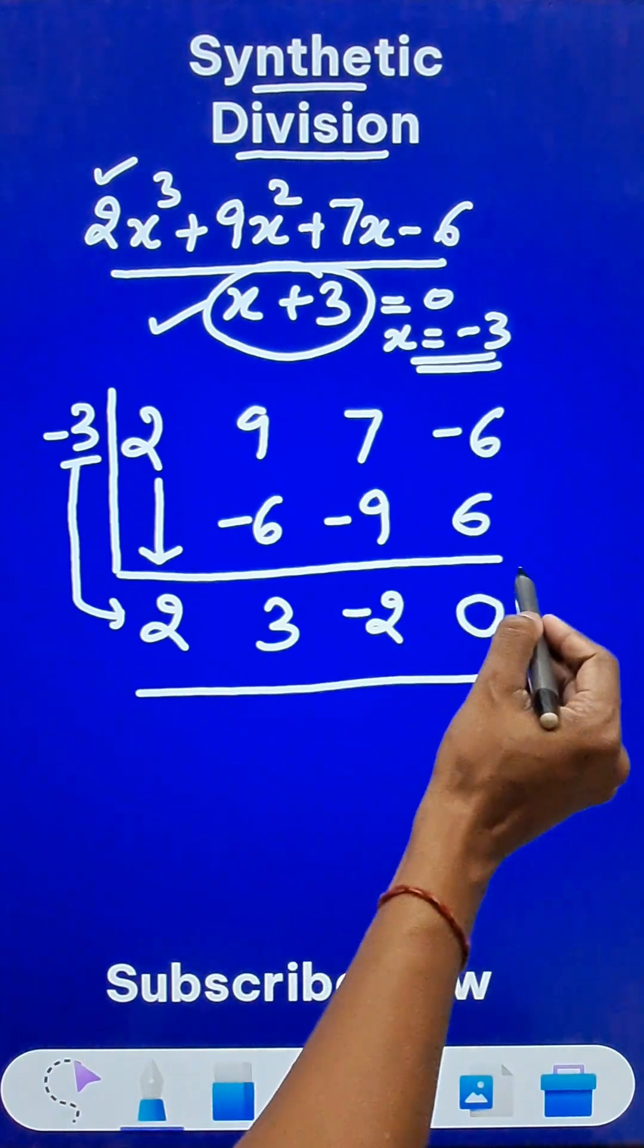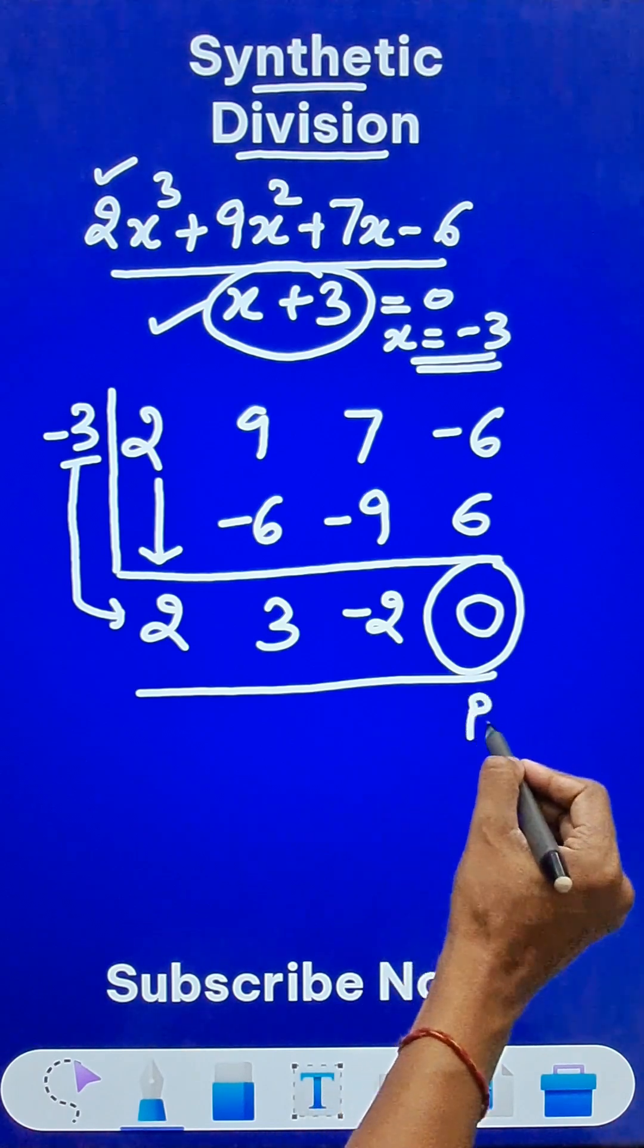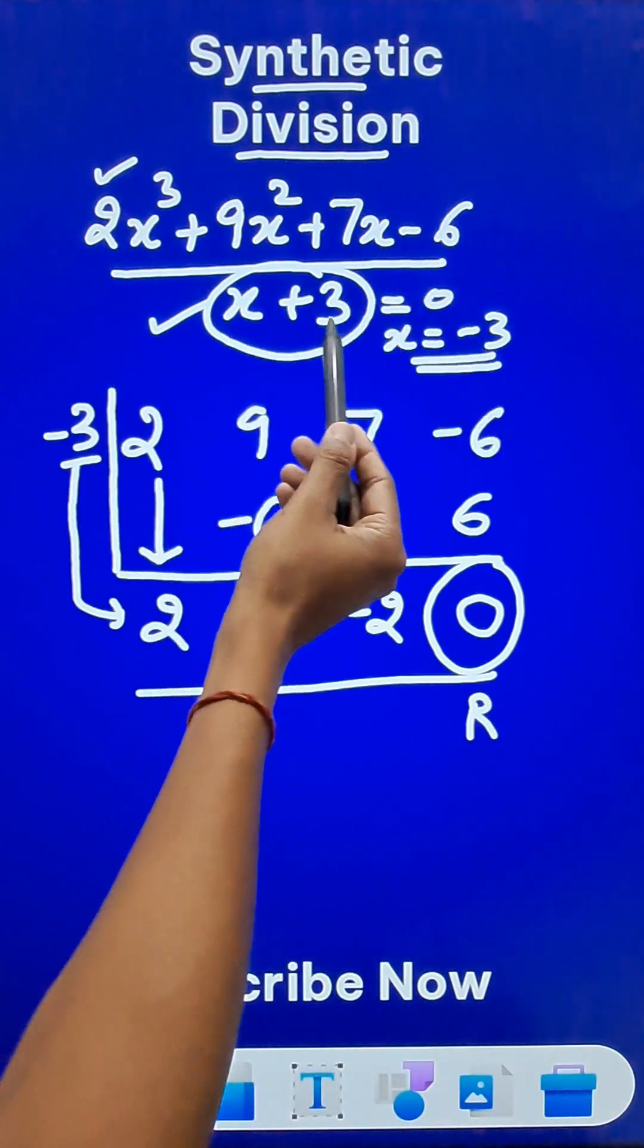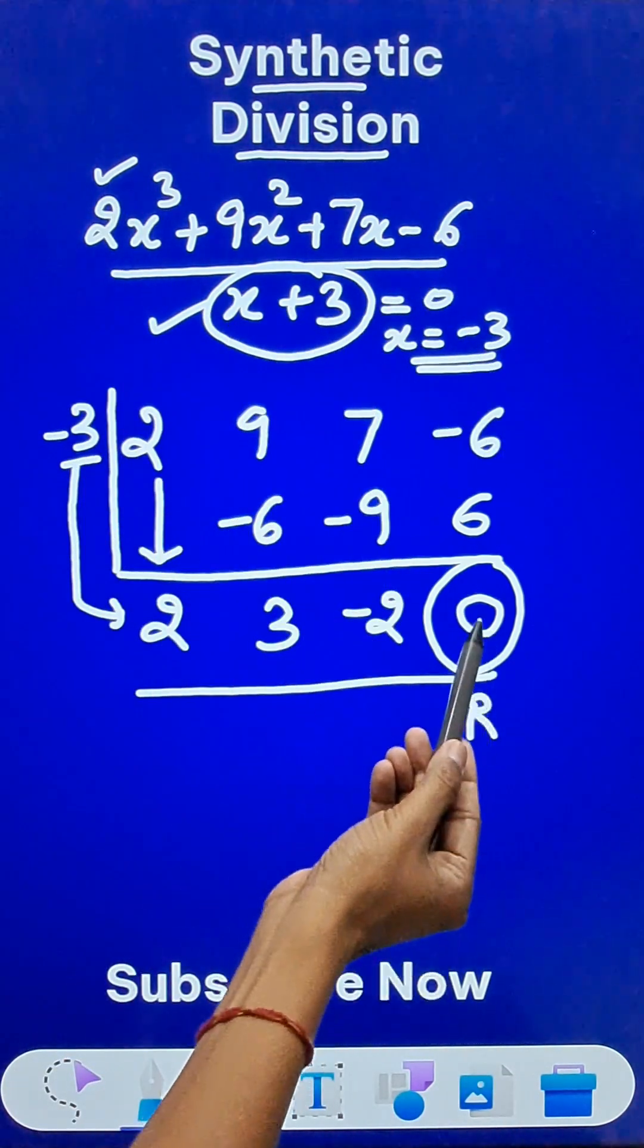Now, what do you do with these numbers? The last number here gives you the remainder, and that means when you divide this big cubic polynomial by x + 3, you are going to get a remainder of 0.